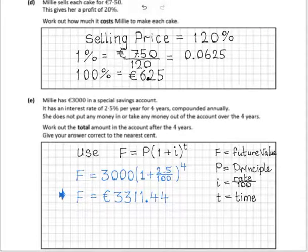On to part E. This is a reasonably challenging question. Millie has €3000 in a special savings account. It has an interest rate of 2.5% per year for 4 years, compounded annually.